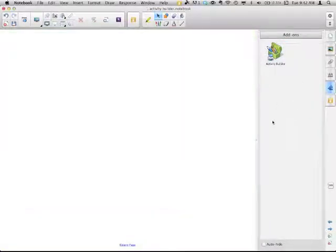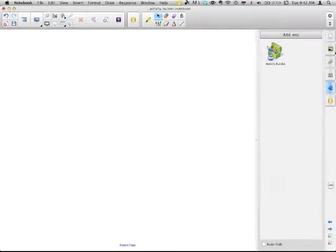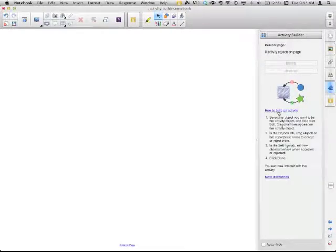When I'm building lessons or working on something and I'm going to be going into the various tabs, I turn off the Auto Hide so that this area here doesn't keep disappearing on me every time I click back into the workspace. So the Activity Builder, I select it. Here is a little tutorial on how to build an activity.